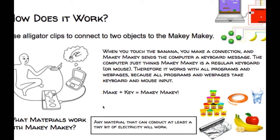So in the given example here, and you see the picture, notice that this wire here from the bottom portion in the individual's right hand is the ground wire. So by holding it in one hand, touching their skin, they are actually grounding themselves, whereas with their other hand, there's a wire connected to the banana. According to the top portion, they are pressing that banana, which really represents the up arrow on the Makey Makey. So when you touch a banana, you make a connection, and the Makey Makey sends the computer a keyboard message. The computer just thinks Makey Makey is a regular keyboard or mouse, therefore it really acts as that interactive controller.